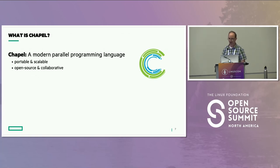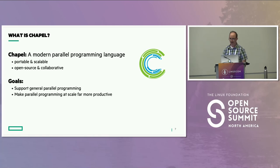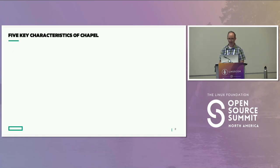In a nutshell, what is Chapel? It's a modern parallel programming language — by modern I mean post-Fortran, C, C++ era. It's portable and scalable, so I do most of my development on a Mac laptop but can recompile and run it on the largest supercomputers. It's open source, with all development done at GitHub, and collaborative — we get code contributions from users and the open source community. At the highest level, Chapel has two main goals: support general parallel programming, and make parallel programming at scale far more productive.